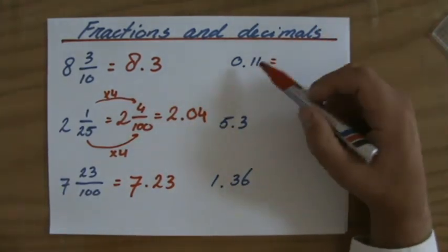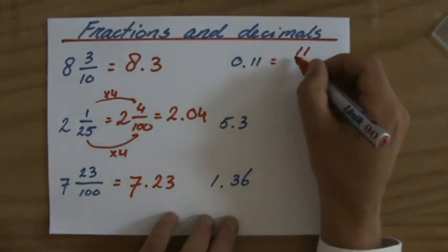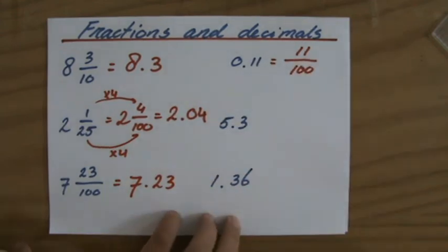Again, place value, tens, hundreds, two decimal digits. How many hundredths do I have? Well, I have 11 of them, 11 hundredths. And always check if you can simplify that, if you can take out a common factor.